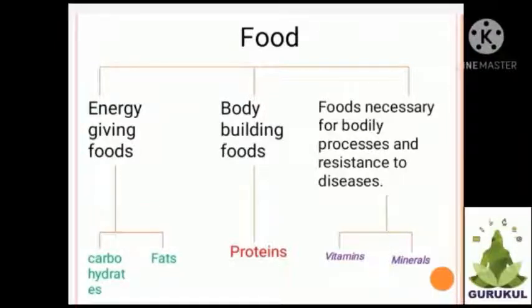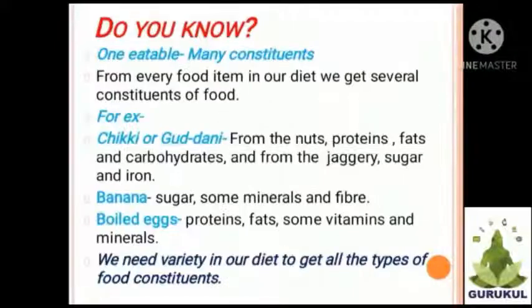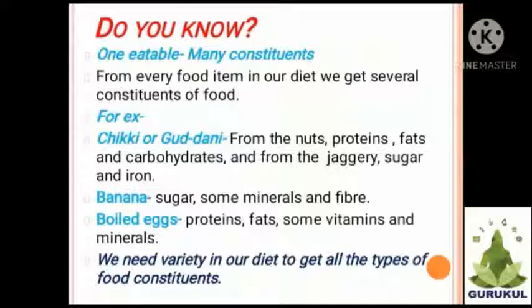All these different types of foods we need for our body. Next point — one eatable, many constituents: from every food item in our diet we get several constituents. Different types of food give us different types of constituents.